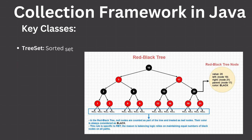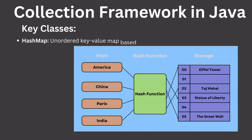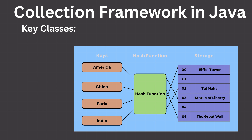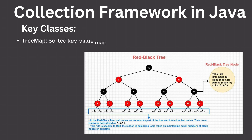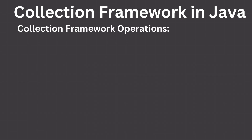TreeSet: A sorted set based on a red-black tree, offering efficient element search and sorted iteration. HashMap: An unordered key-value map based on a hash table, providing fast access based on keys. TreeMap: A sorted key-value map based on a red-black tree, offering efficient element search and sorted iteration.